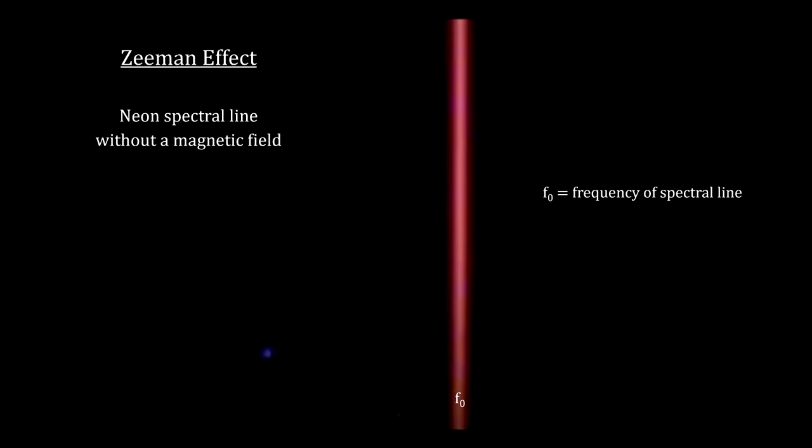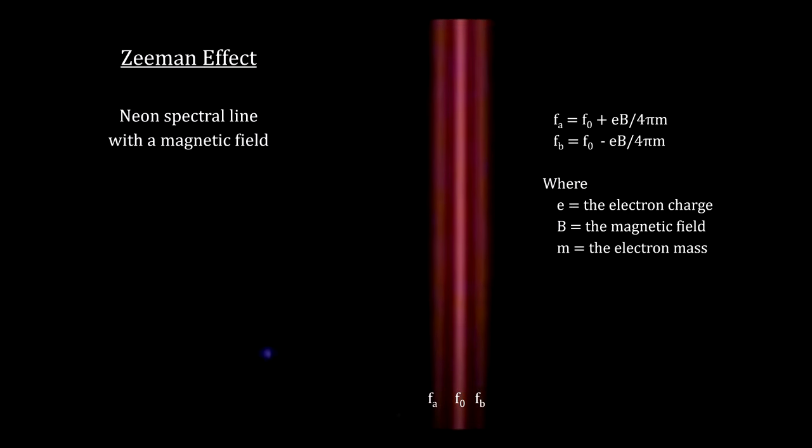And two, the splitting of spectral lines by magnetic fields was not accounted for. This is known as the Zeeman effect. This effect is now used to measure the strength of magnetic fields around distant stars.